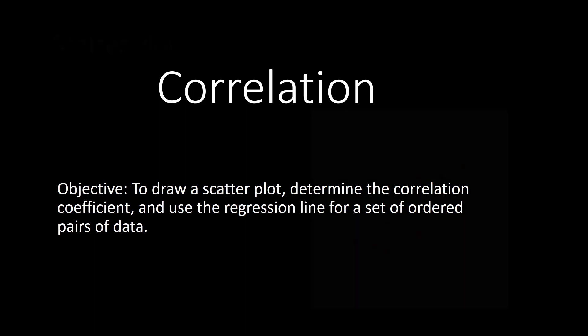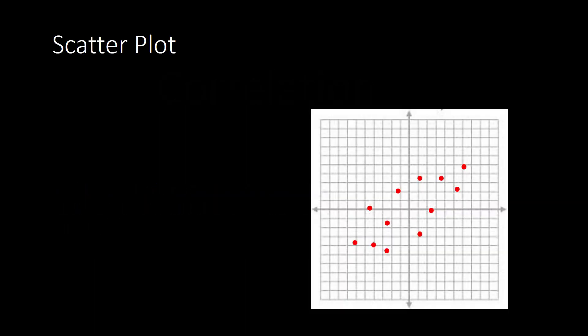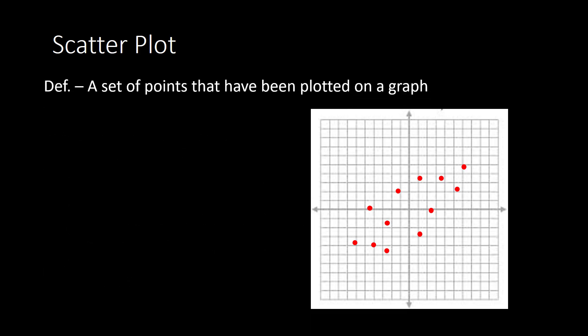Starting with the scatterplot — what is a scatterplot? A scatterplot is simply a set of points that have been plotted on a graph. To create a scatterplot, all we do is plot points onto the graph.